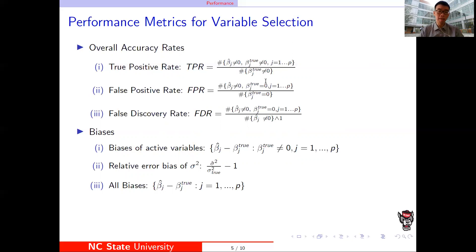Also, we compare the biases, including the biases of active variables, relative error biases of sigma square, and all biases.